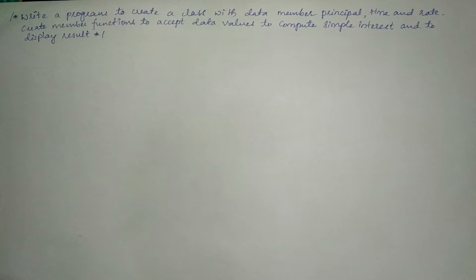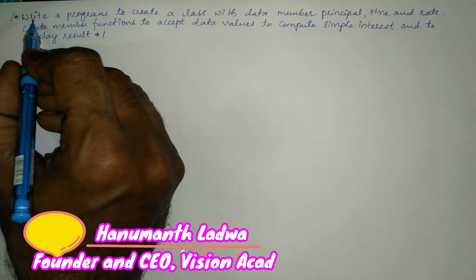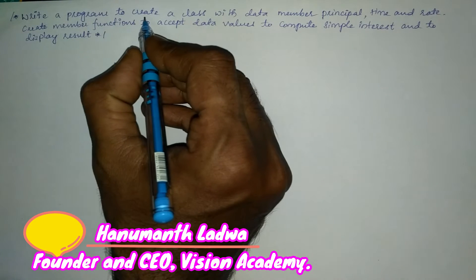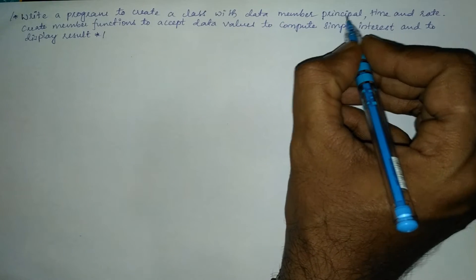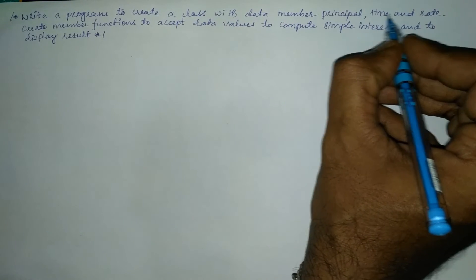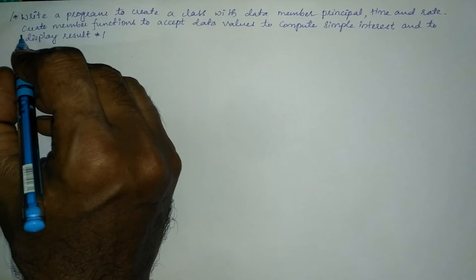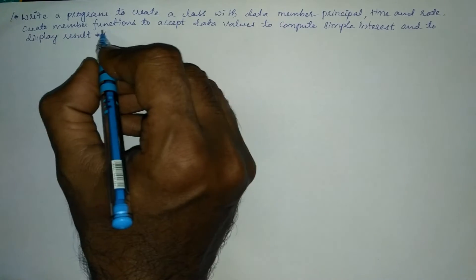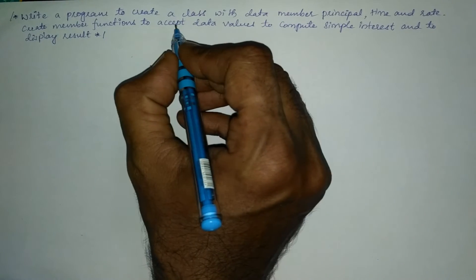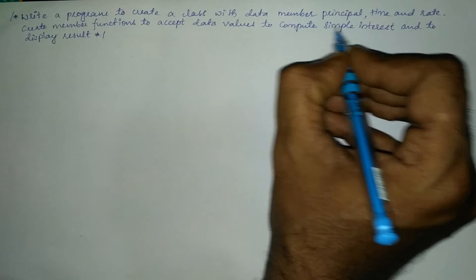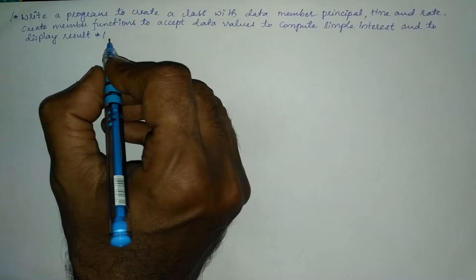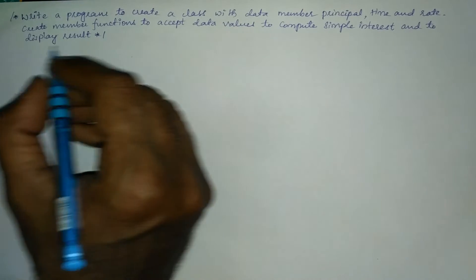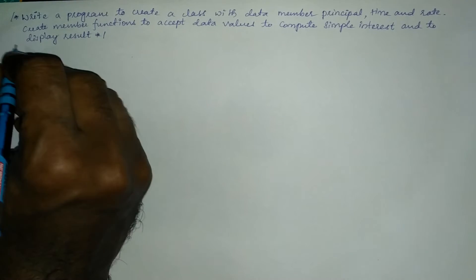Hello and welcome to Vision Academy. In this video we are going to write a program to create a class with data members: principal, time, and rate. We will create member functions to accept data values, to compute simple interest, and to display the result.